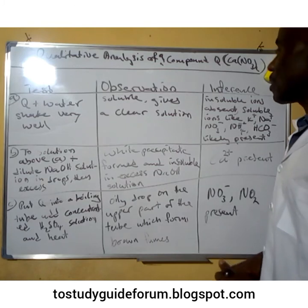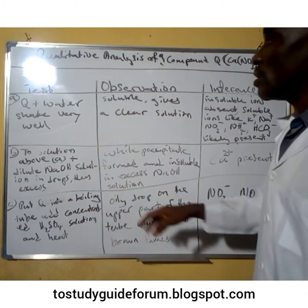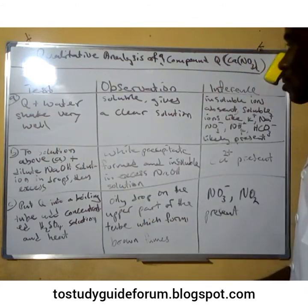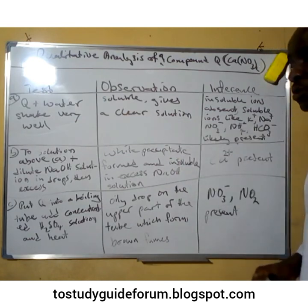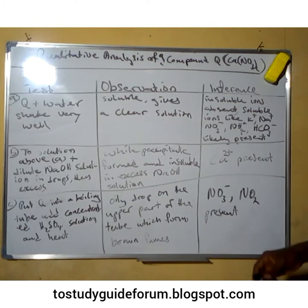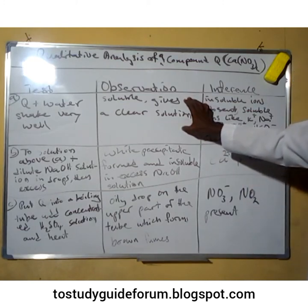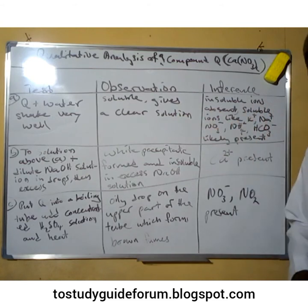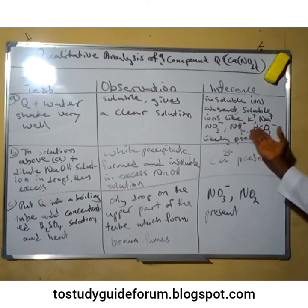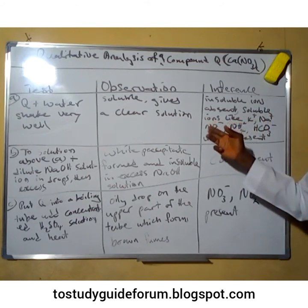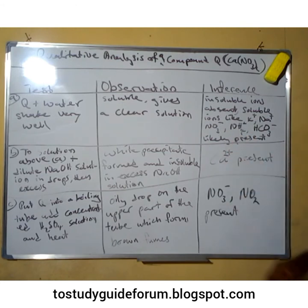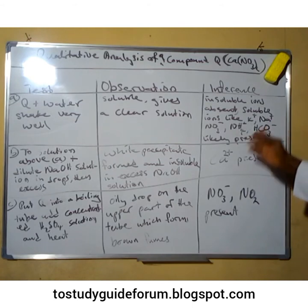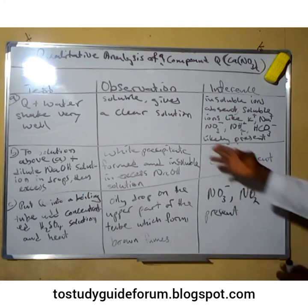When compound Q is added to water and shaken, we observe that it is soluble and gives a clear solution. Since we have a clear solution, it means that transition element ions are absent and insoluble ions are also absent. The soluble ions likely present are: potassium, sodium, trioxonitrate(V), ammonium ion, hydrogen carbonate, and carbonate ion, since all of these are examples of soluble ions that can give a clear solution.